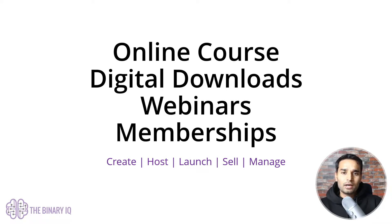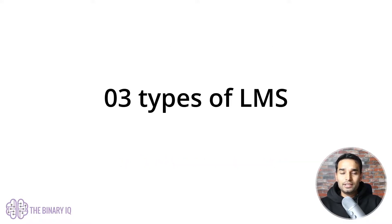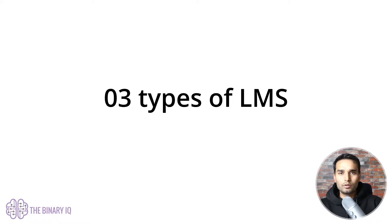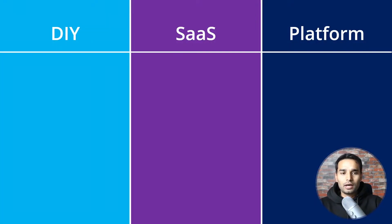In essence, a learning management software helps you create, host, launch, sell, and manage your online courses and digital downloads. Now, there are three key types of LMS systems out there, and I'll be taking you through each of them one by one. The three types are do-it-yourself, a SaaS system, and a platform system.